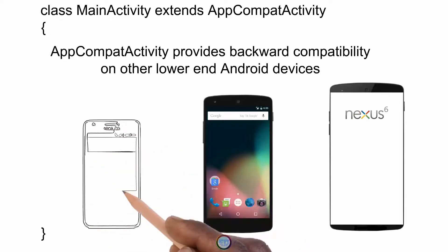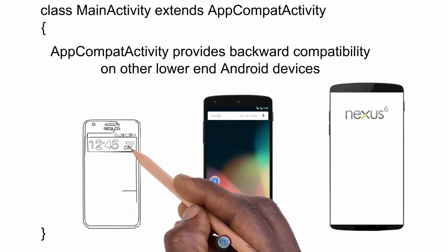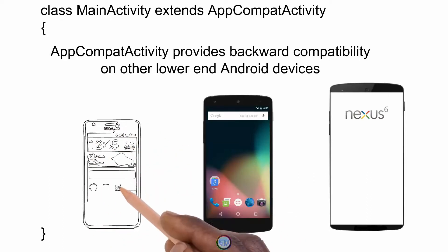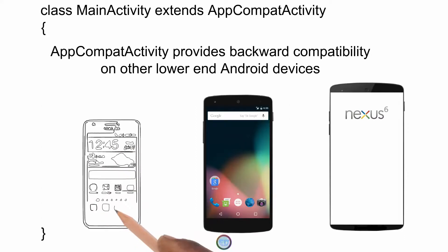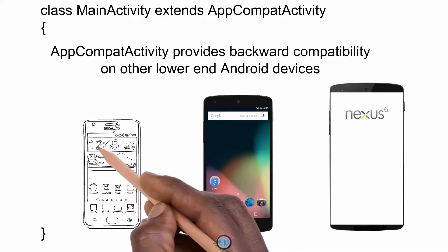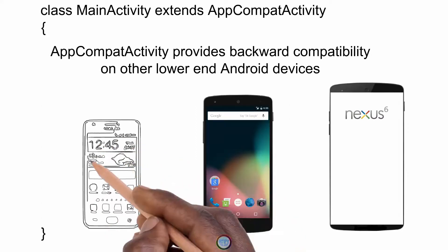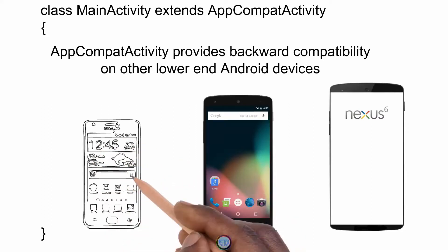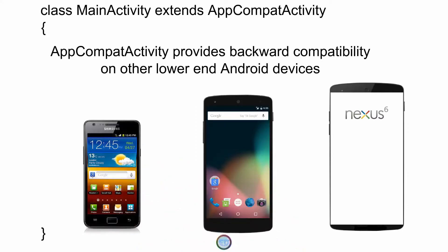So in short, AppCompatActivity is basically a super class which consists of some of the main methods, and when you extend MainActivity with AppCompatActivity you can inherit the methods from AppCompatActivity into the MainActivity.